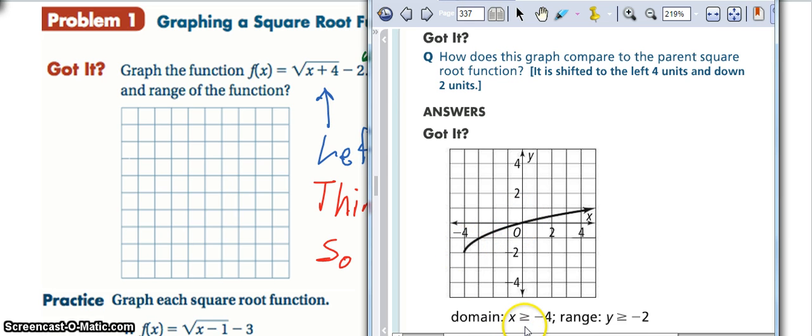But then that makes my domain, my possible x values, x starts at a possible negative 4 but cannot go any left from that, so that makes it greater than or equal to negative 4. And the range, all my y values, start at the negative 2 and then go up from there.